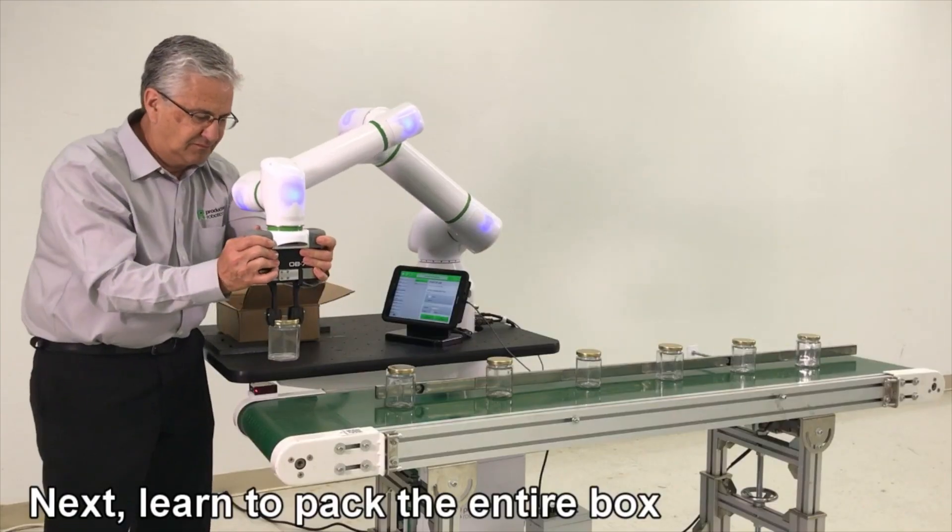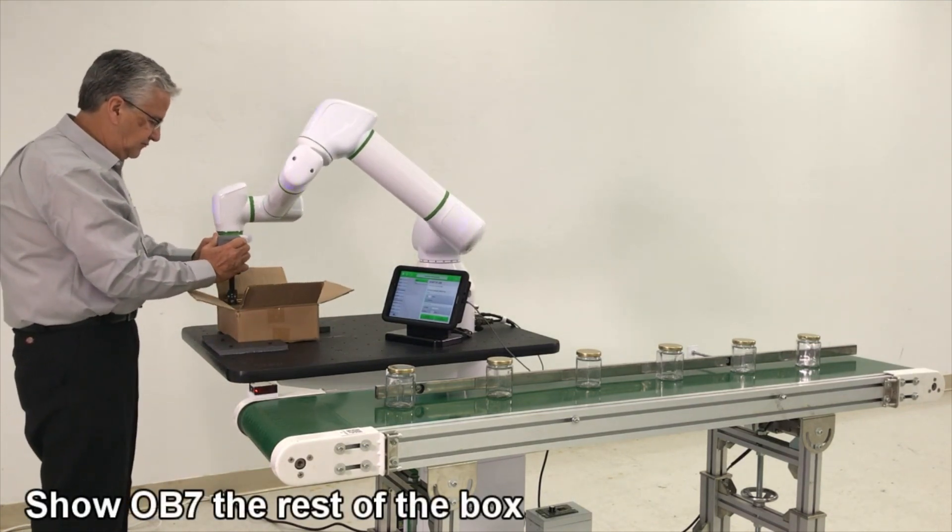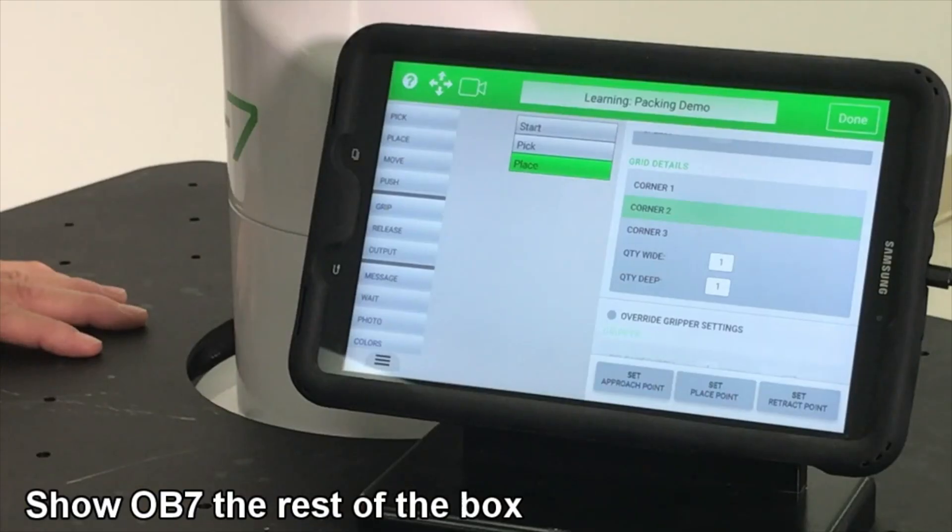Then pick up the next jar and move it to the second corner. And press place. Corner 2. Pick position. Learn.